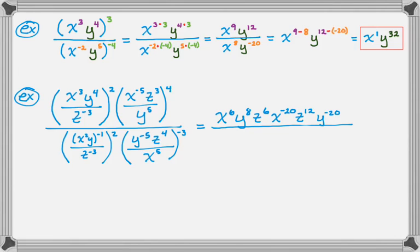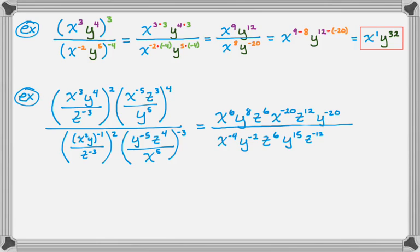Now I'm dealing with the first part of the denominator. I see x squared in a quantity to the negative first, so x squared to the negative first is x to the negative two, but that's inside a quantity that's squared — so x to the negative two to the second is x to the negative fourth. Then y to the negative first squared is y to the negative second. z to the negative three squared is z to the negative six, but it's in a denominator, so I move it up as z to the positive six. Then y to the negative fifth to the negative third is y to the 15th. z to the fourth to the negative third is z to the negative 12. And x to the fifth to the negative third is x to the negative 15th, but that's in a denominator, so I move it up as x to the positive 15th.